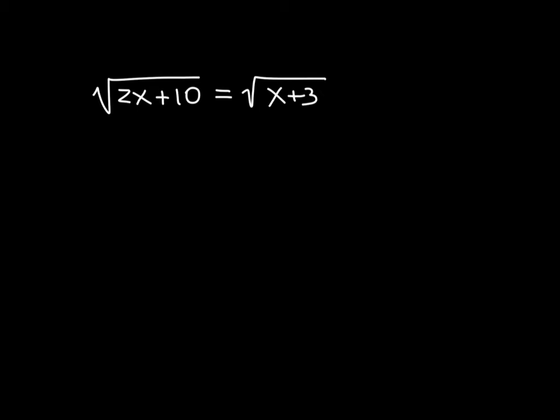Okay, so let's just take a look at one more example of this process. So we have the square root of 2x plus 10 equals the square root of x plus 3. Again, the first step is we're going to square both sides. And we cancel the square root and the square root in both cases there. And we have 2x plus 10 equals x plus 3.